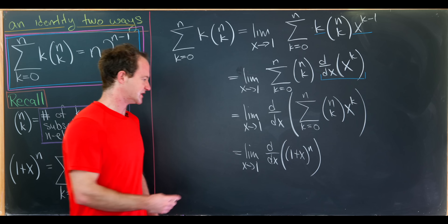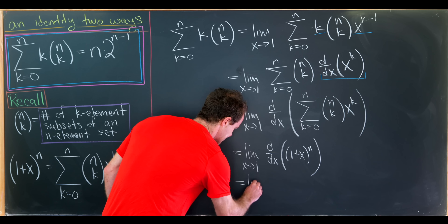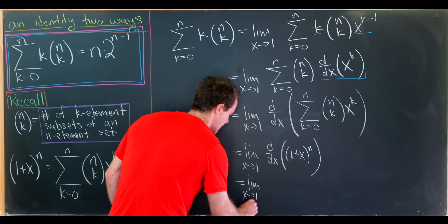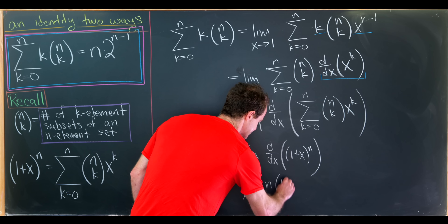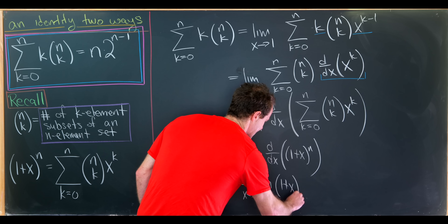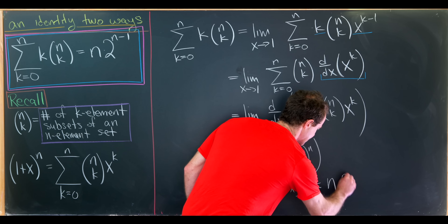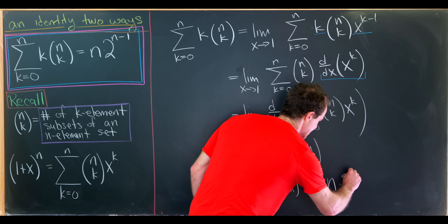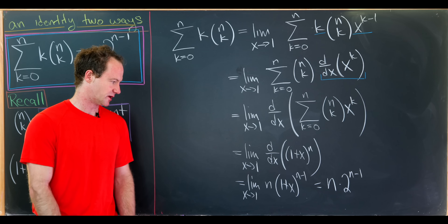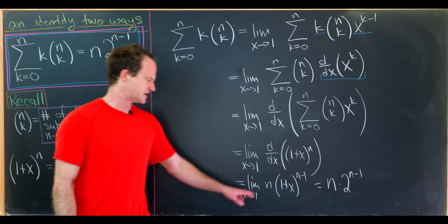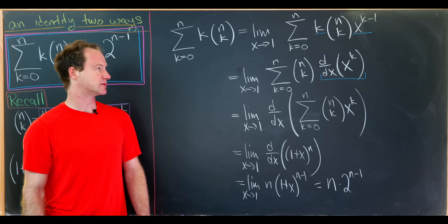So this equals the limit as x goes to 1 of the derivative with respect to x of 1 plus x to the n. Using the chain rule, that leaves us with the limit as x goes to 1 of n times 1 plus x to the n minus 1. That pretty clearly gives us n times 2 to the n minus 1, because 1 plus 1 is 2. That's really as simple as it is.